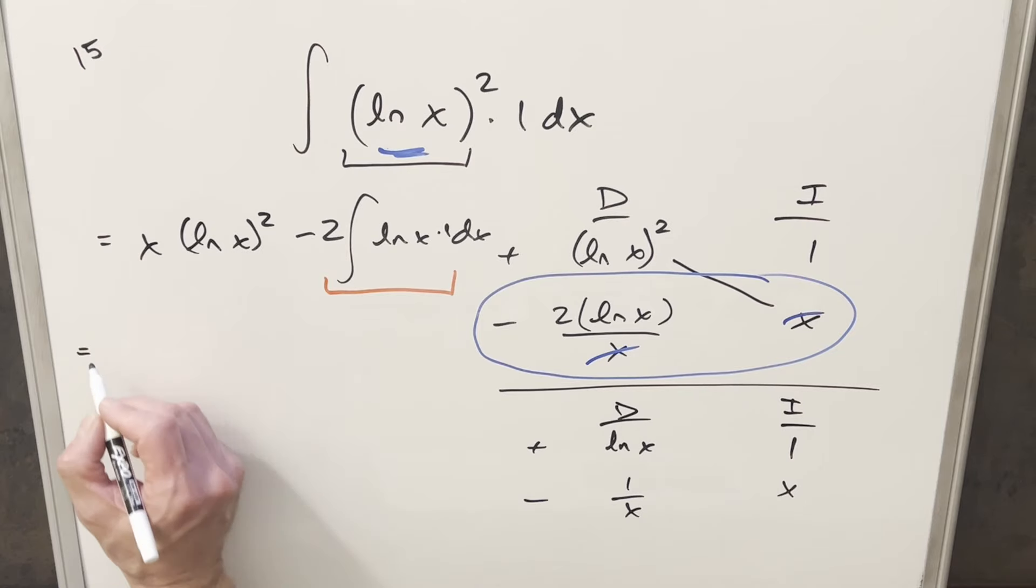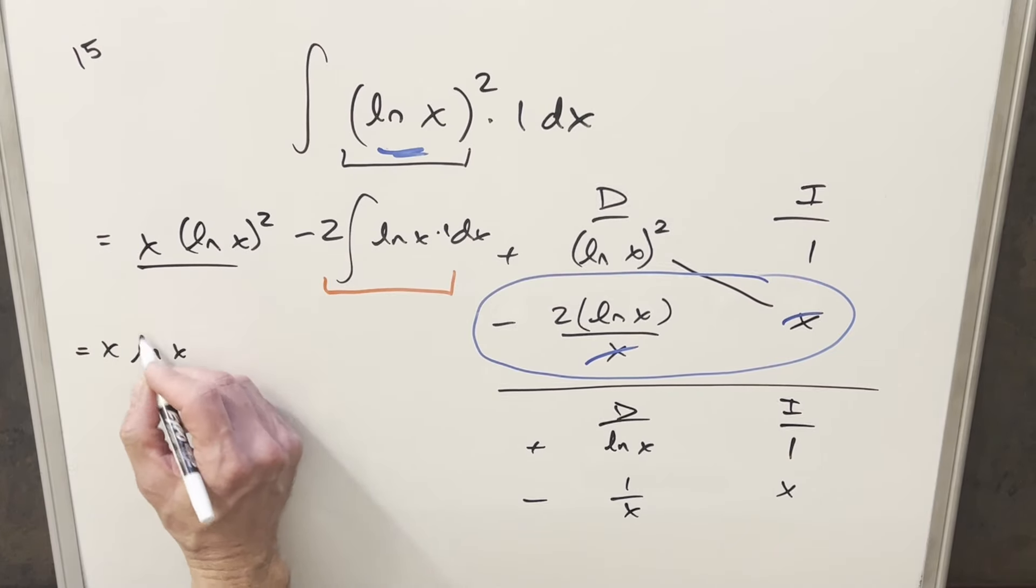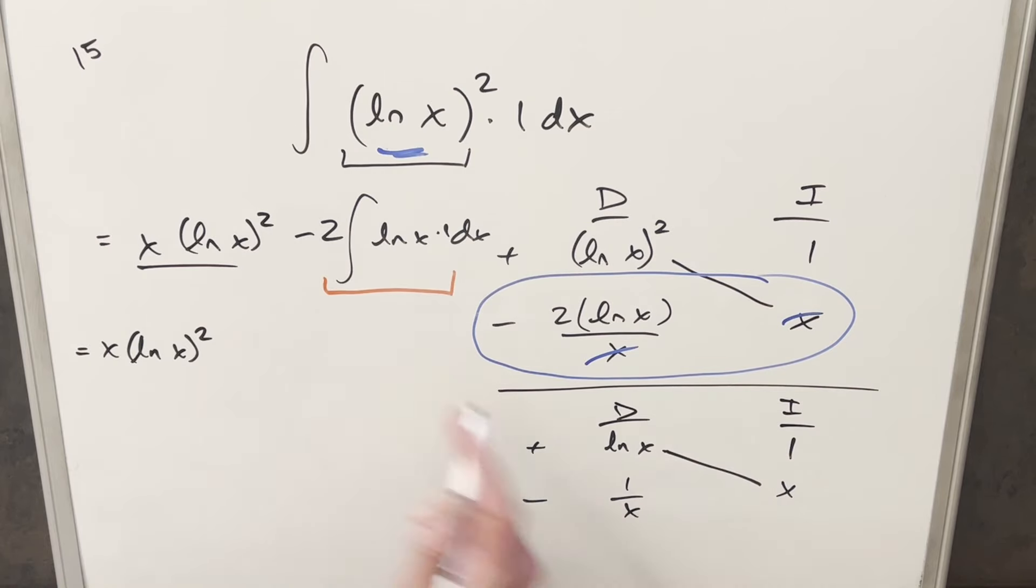So then let's put all the pieces together. First we're going to bring this down, x ln x all squared. We have a piece of the solution right here on the diagonal, but I want to distribute in this minus 2. So I'm going to write this as minus 2 x ln x.